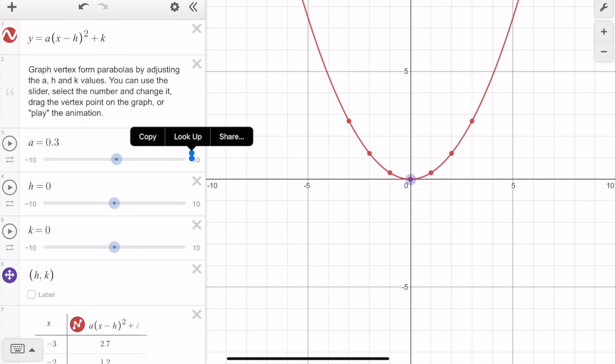So the A value stands for both vertex form and standard form. If it's negative, it will go in the downward direction, and that's what you want to do for your activity, whereas when A goes to the positive direction, the direction of the parabola is going upwards. See you next time.